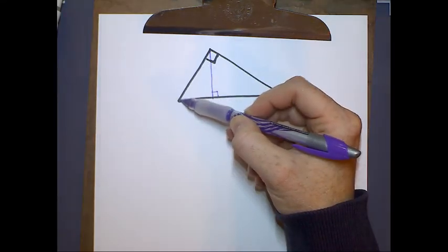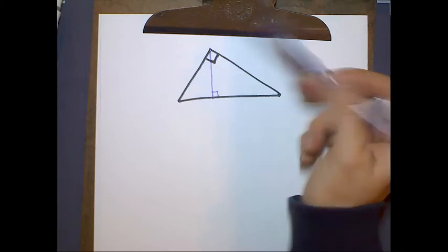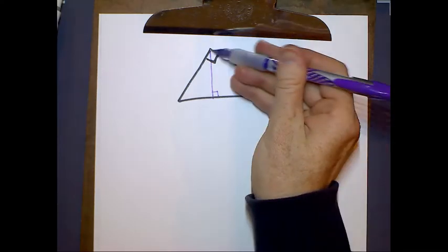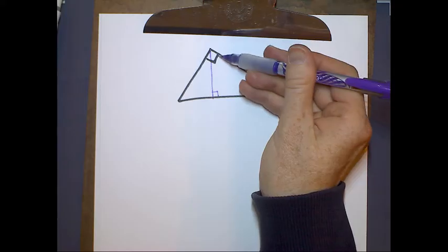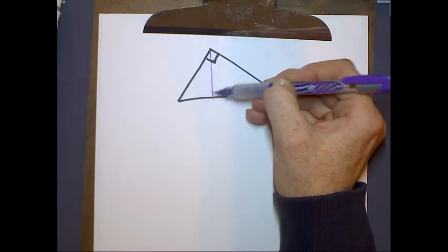Because if we connected this vertex to this side in a perpendicular way, we would actually have the leg. Same thing here, it would be this leg because it's also perpendicular. So, the only altitude that's not a side is this one that I'm drawing here.